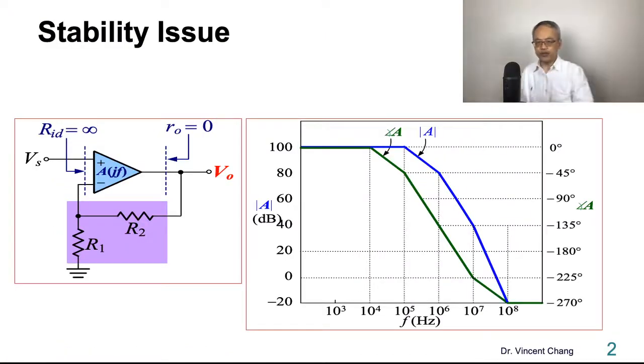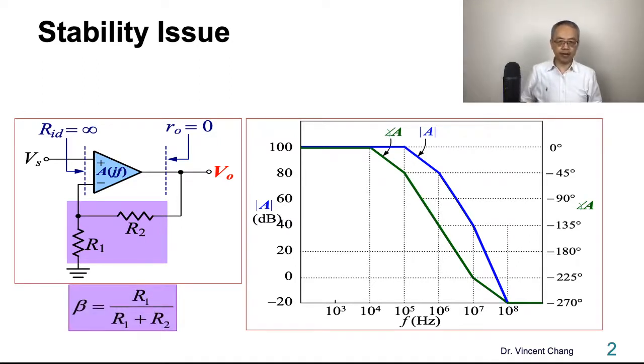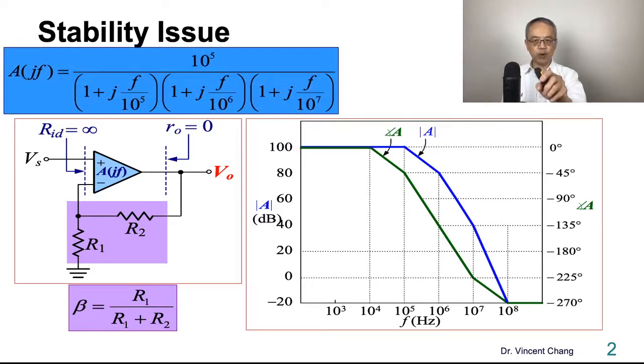Let's quickly review the stability issue: frequency response, beta, series shunt feedback, and 3-pole amplifier. If the open loop transfer function has three poles at 100k, 1 mega, and 10 mega, 100 decibels, then the frequency response of the magnitude transfer function and the phase response.